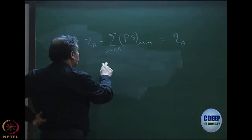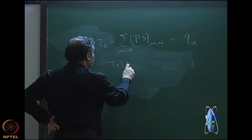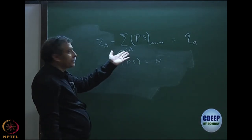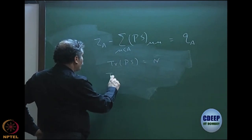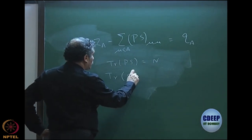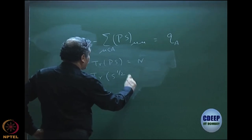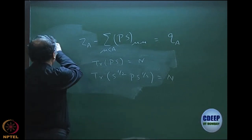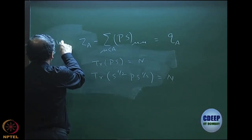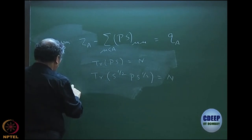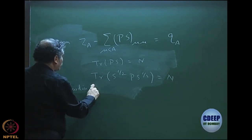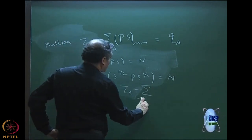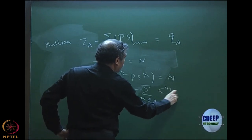We said that since trace of PS equals N, and the interpretation is that we have distributed the diagonal elements over different atoms, we could do some other population analysis — like S to the half times P times S to the half, which is also equal to N. So we could write the Löwdin charges as ZA minus the sum over mu in A of S-to-the-half P S-to-the-half.